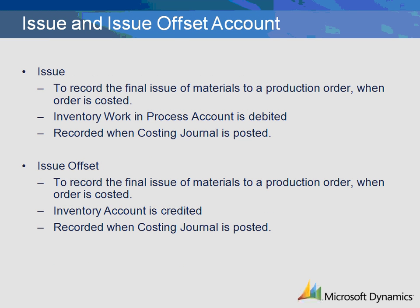The Issue Transaction is the setup related to the recording of completed and costed production orders. The transaction is created when the final calculation of a production order quantity is completed and posted for the production order. The ledger account for this transaction is the inventory account associated with the raw materials issued to the production order and is credited at the time of journal posting.